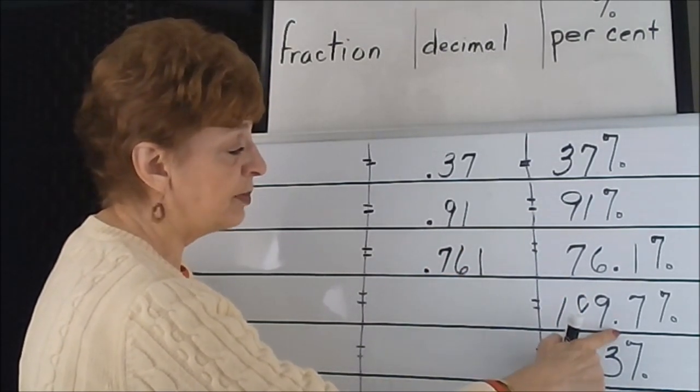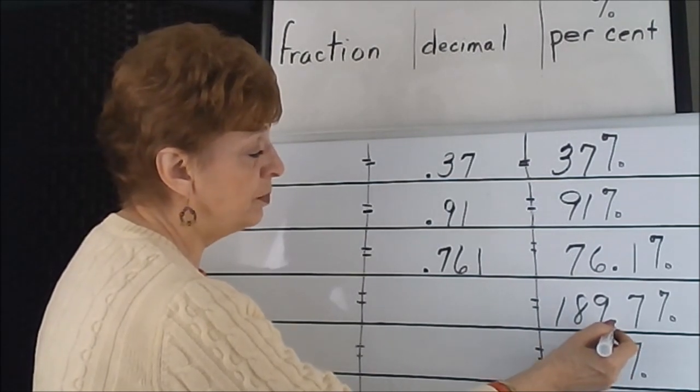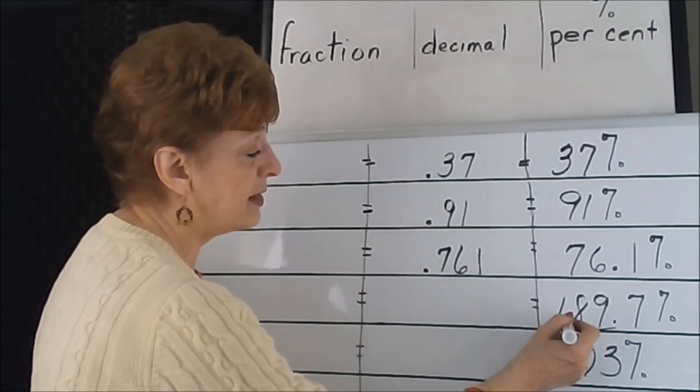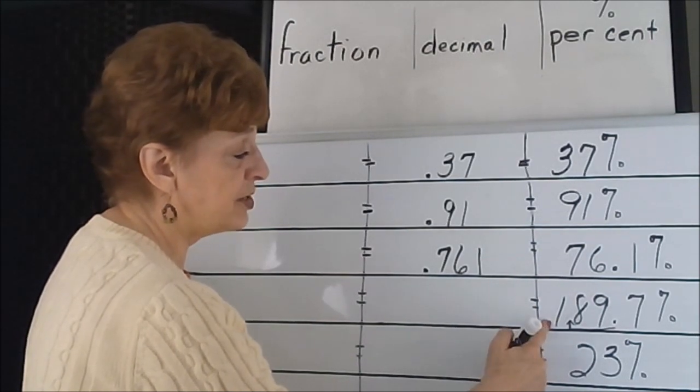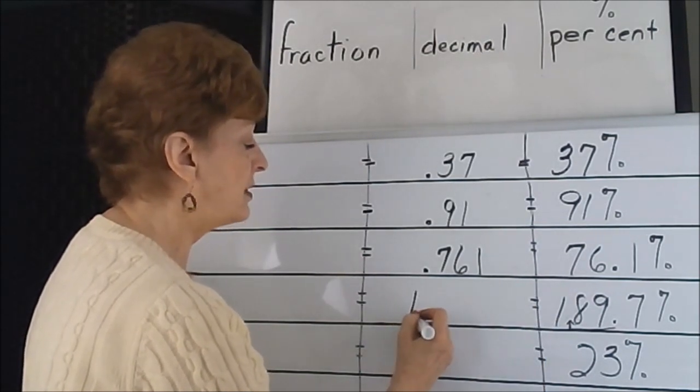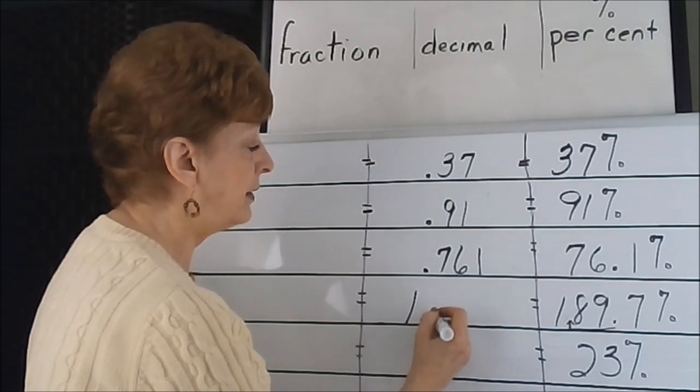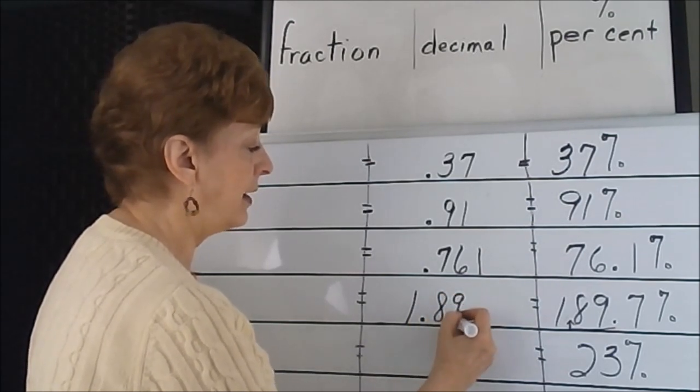This one has a decimal point in it. We'll take this two places to the left this time, and since we have a number on the other side of the 8, we will have to say it like this: 1.897.